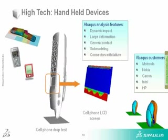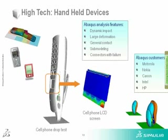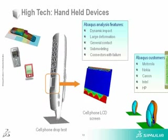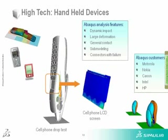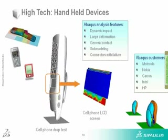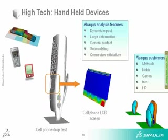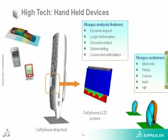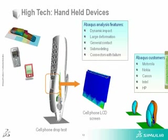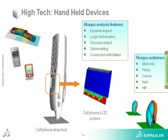There are also connectors with failure. You'll see a box around the cell phone drop test area pointing to a smaller region showing stress contours — this illustrates the sub-modeling capability. You can take a very complex assembly, make a fairly coarse model of it, run an analysis such as this drop test, and then do a sub-model to get a much more detailed set of results on an area of interest, such as the cell phone LCD screen. This is an example of the sophisticated techniques that can be employed with Abaqus analysis.